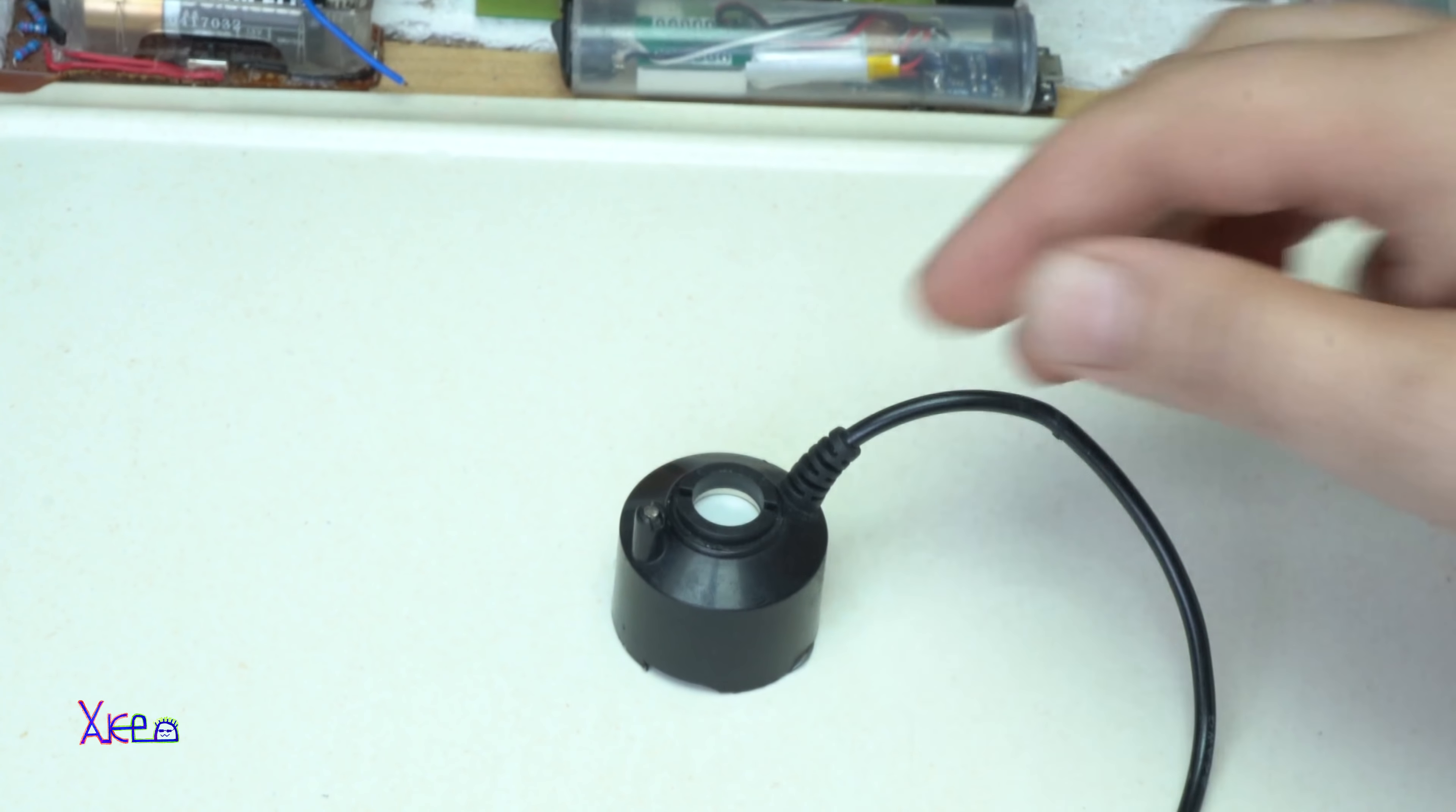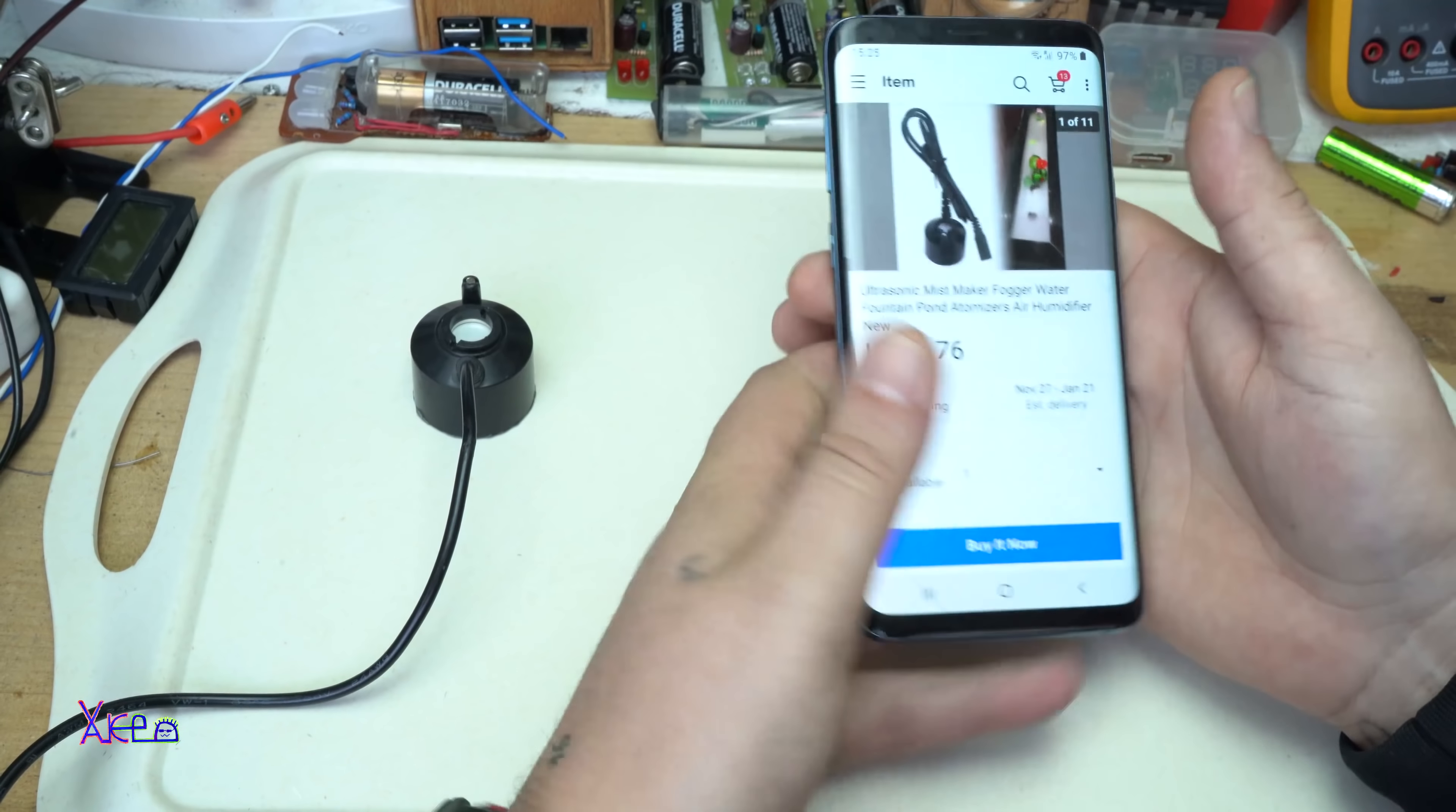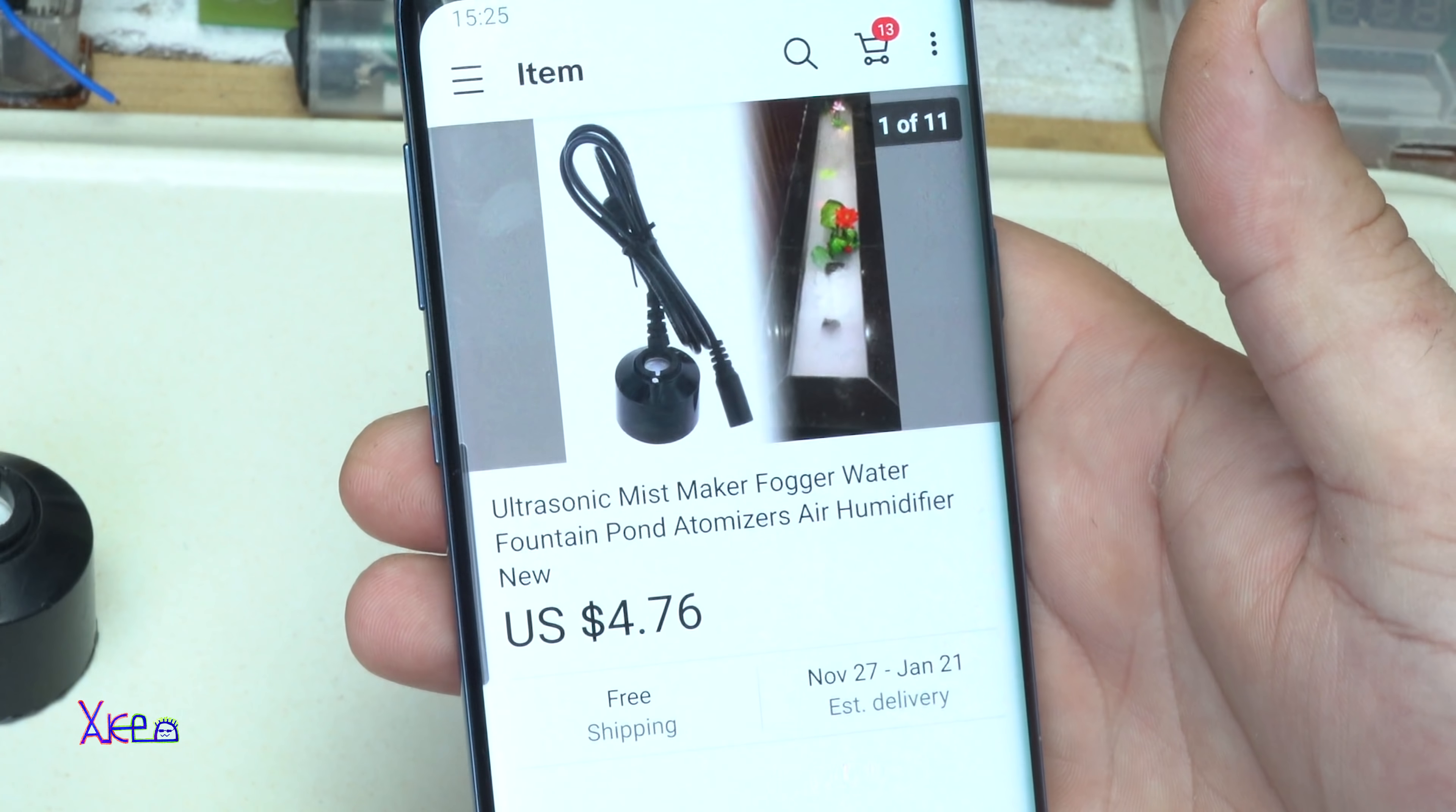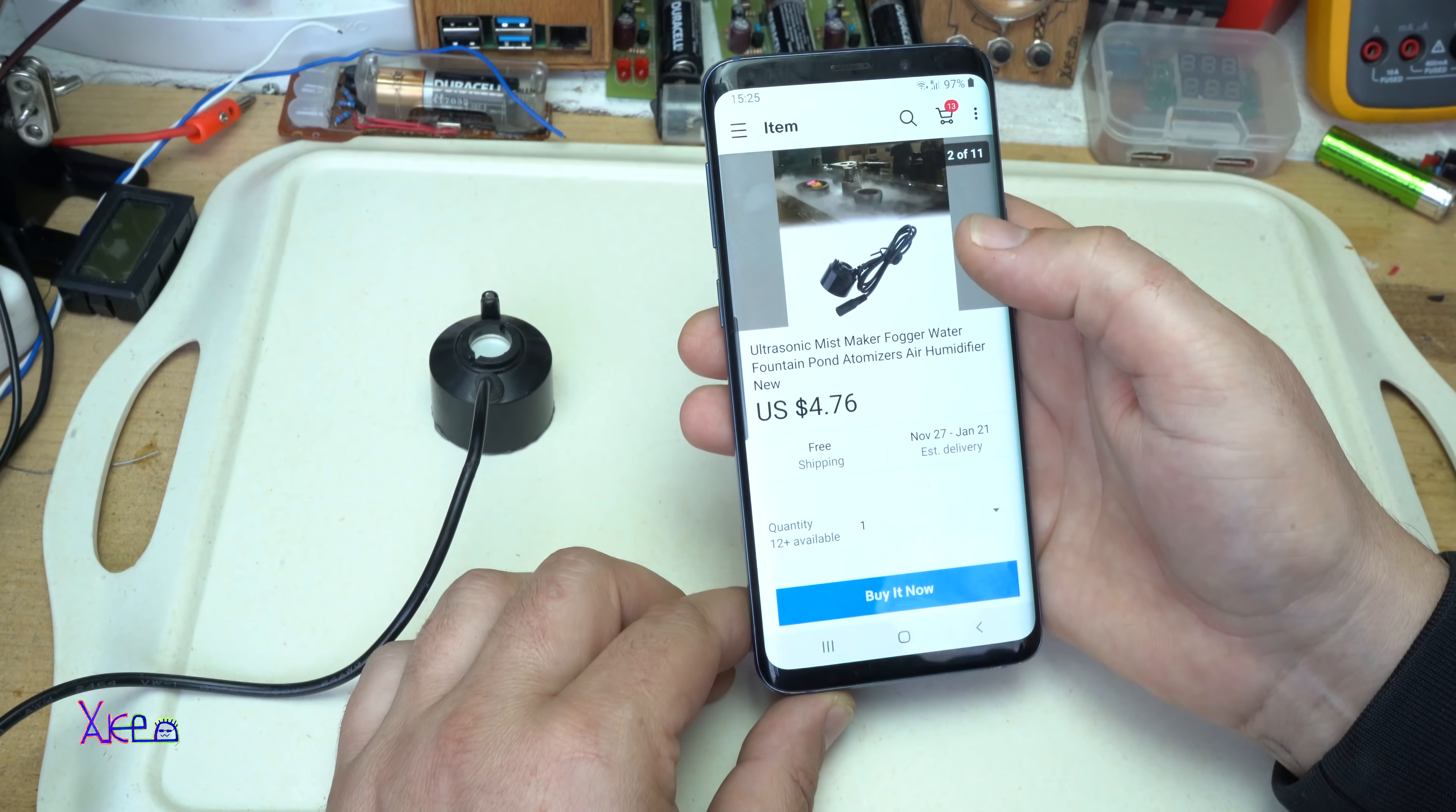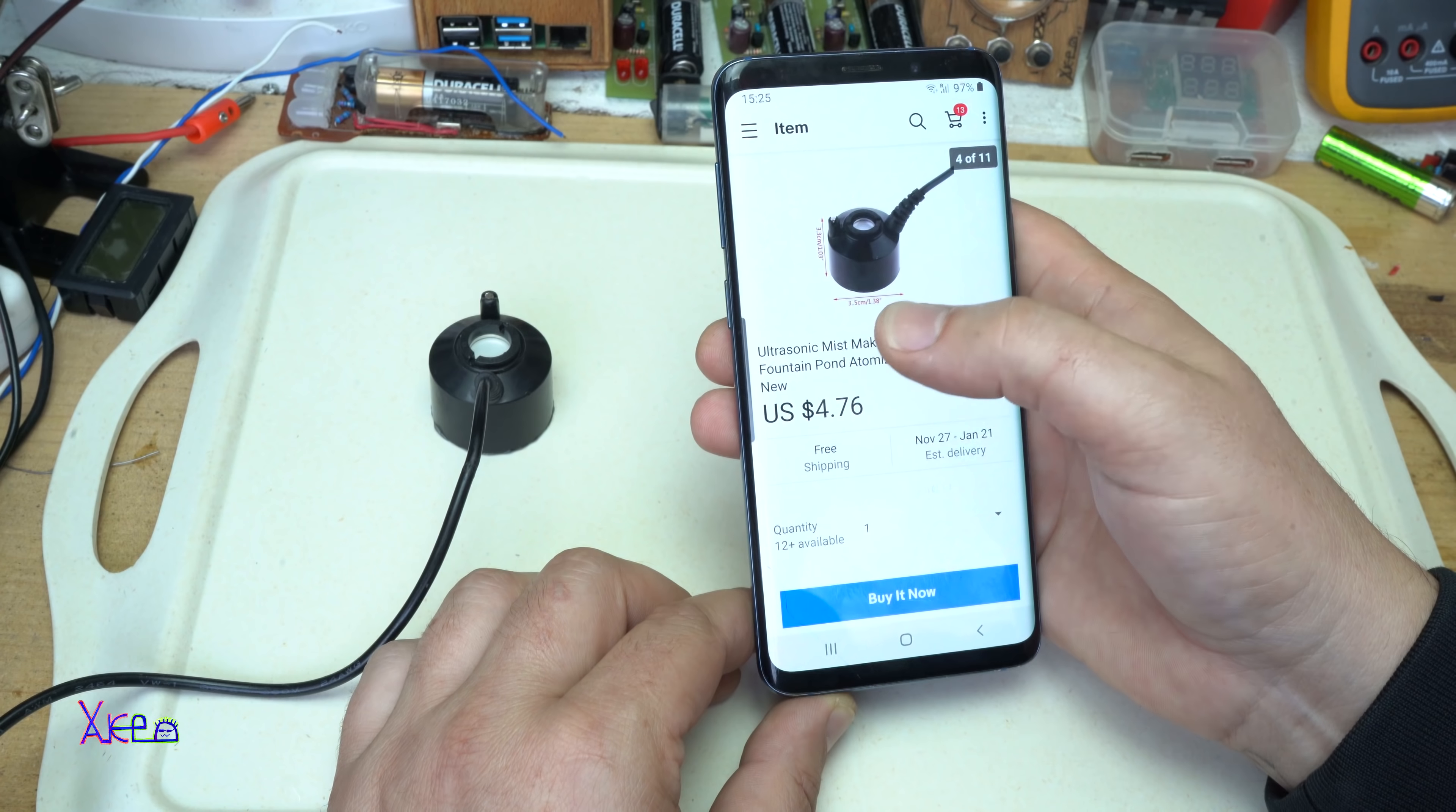Okay, what is this? This model is an ultrasonic mist maker, fogger maker, or air humidifier model that I bought from eBay. Cost around $5, and this thing is pretty awesome.